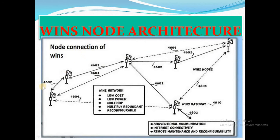For node architecture: the area is divided into a number of nodes, each node connected to another, and all nodes connected to a main node. The wireless integrated network is low cost, consumes low power, supports multi-hop communication, and is reconfigurable.